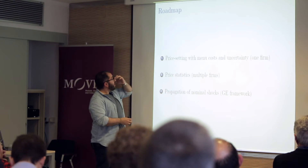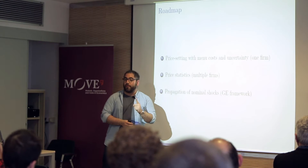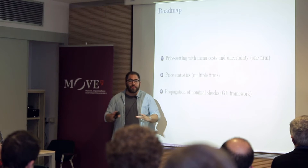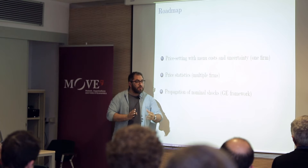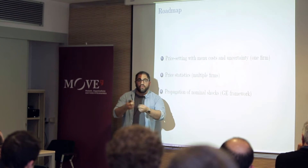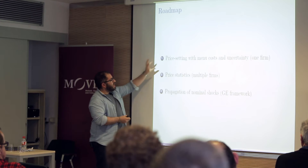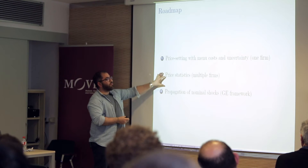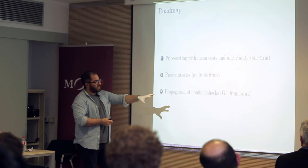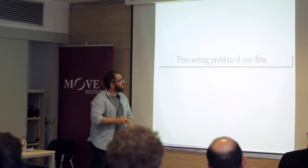The plan is: first, a price setting model with menu cost and uncertainty for one firm — a very general model applicable to labor adjustment, optimal capital, or portfolio reallocation with adjustment costs and information frictions. Then I'll extend to many firms to show how we get the decreasing hazard, and then I'll do a money shock in a general equilibrium framework.